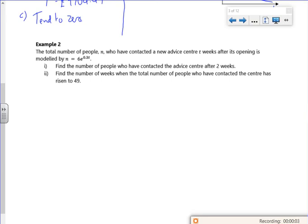Example 2, which is really example 3, says the total number of people M who have contacted a new advice center T weeks after it opens is modeled by that. Part 1 says find the number of people who contacted it after 2 weeks. Check your units, so that's in weeks.